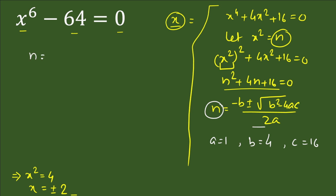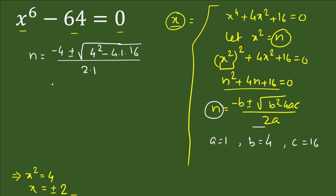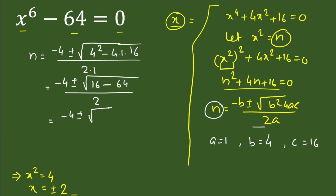Substituting: n equals (minus 4 ± √(4² minus 4·1·16)) divided by 2·1. This gives (minus 4 ± √(16 minus 64)) divided by 2, which is (minus 4 ± √(minus 48)) divided by 2.